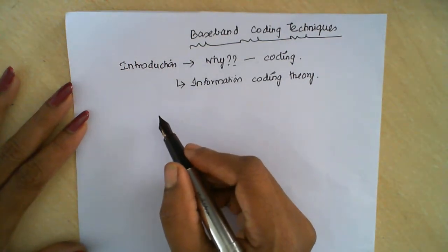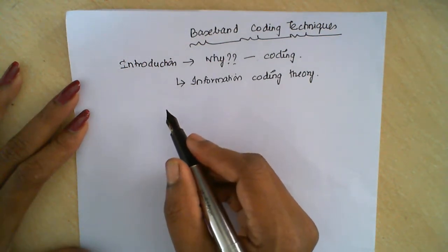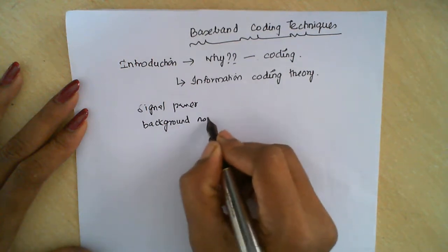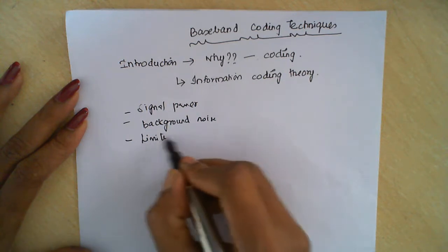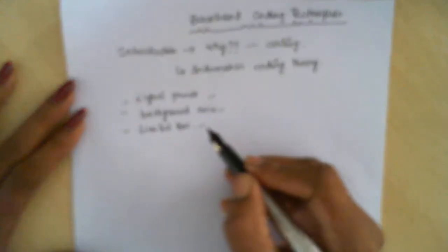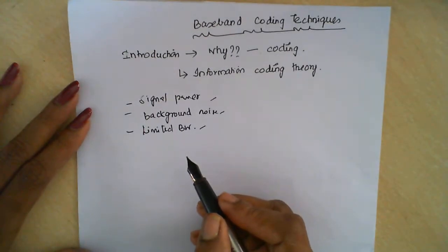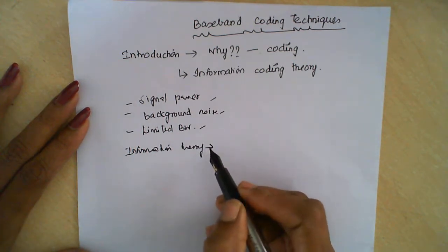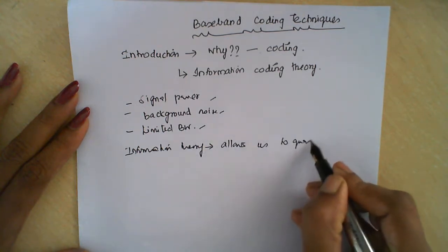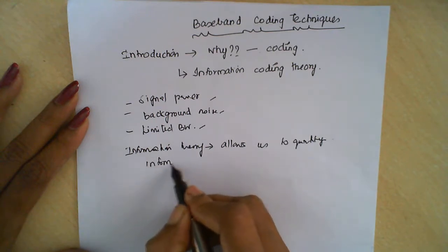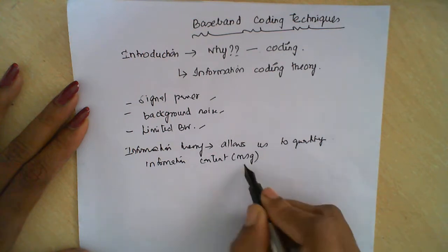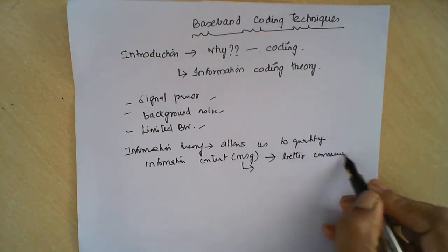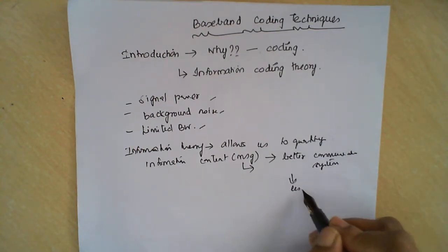As we know, the basics of communication systems studied so far is limited by its performance due to its signal power, background noise, and limited bandwidth. These are the things which should be considered when identifying an efficient communication system. Information theory allows us to quantify this information content, which is nothing but the message, giving us a better communication system with less error.